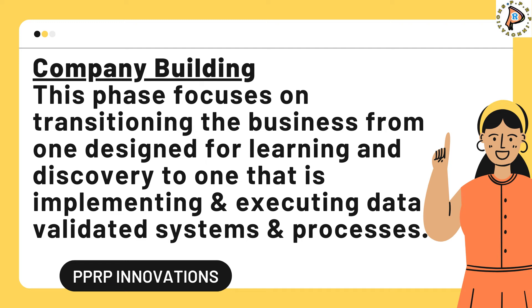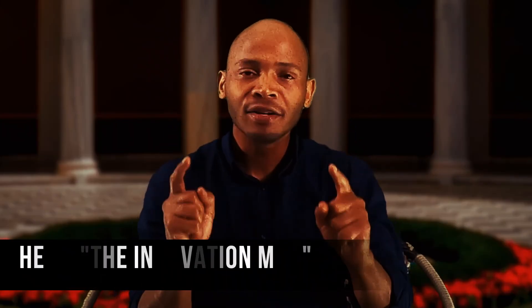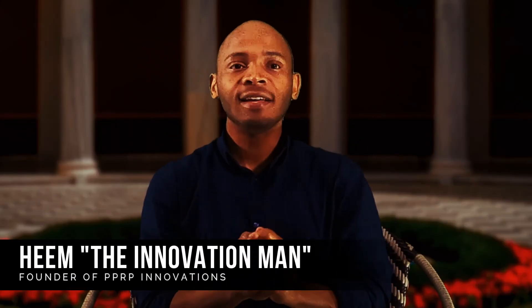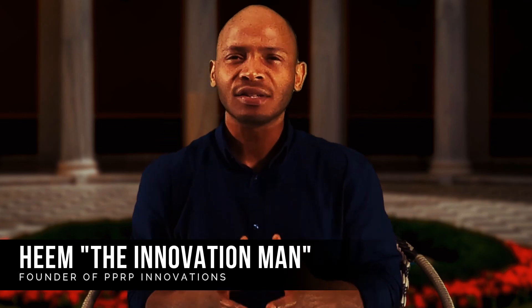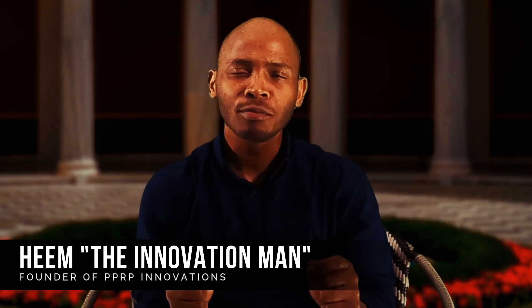During the company building phase, your focus is on transitioning your business from one designed for learning and discovery to one that is implementing and executing data-validated systems. The goal is to transform an informal business into one with formal, mission-oriented departments — enhancing viable systems and procedures to facilitate customer creation, develop a customer base, and optimize your systems to serve larger, more diverse audiences.